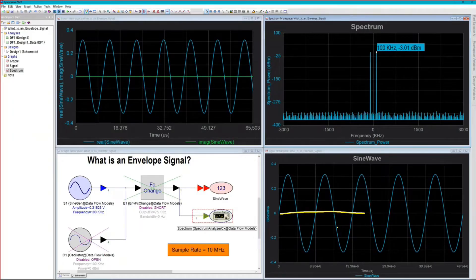Right now, SystemVue is operating in real baseband mode. This is a real baseband signal, which is this source. It puts out a blue arrow. Anything other than a black arrow is just a baseband signal. And sure enough, the real part is there, but the imaginary part is zero.